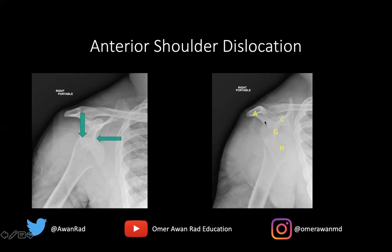On the scapular Y view — called that because the scapula looks like a Y, with the acromion and clavicle forming the two prongs and the scapular body as the base — the glenoid is this circle. The humeral head should be superimposed on the glenoid normally. But if the humeral head is under the coracoid, that indicates an anterior dislocation because the coracoid process is an anterior structure. If the humeral head were sitting under the acromion, that would be a posterior dislocation, since the acromion is a posterior structure.